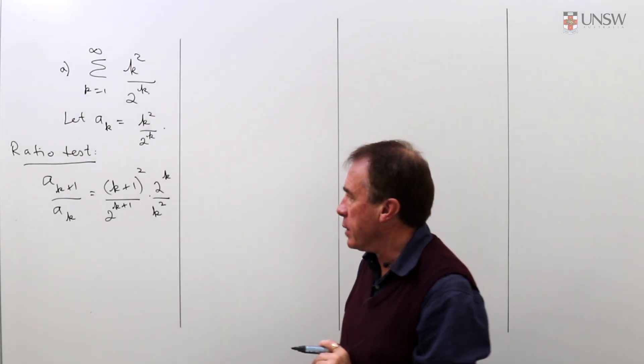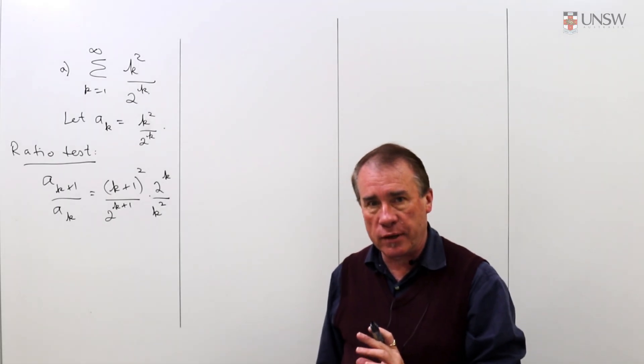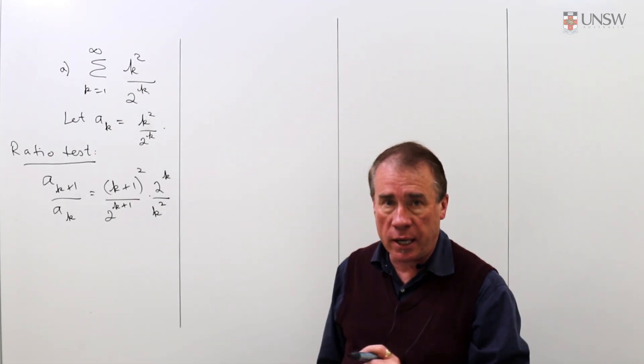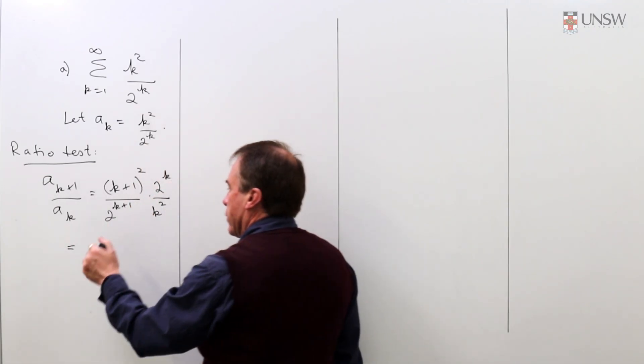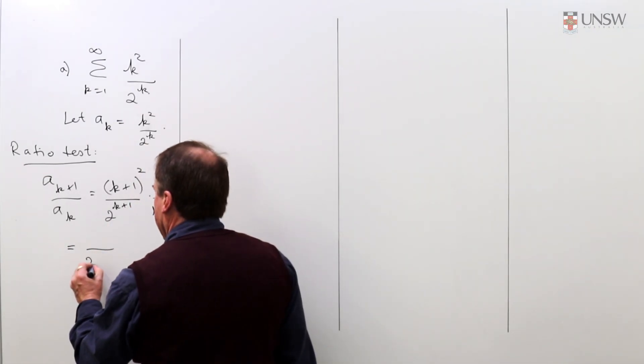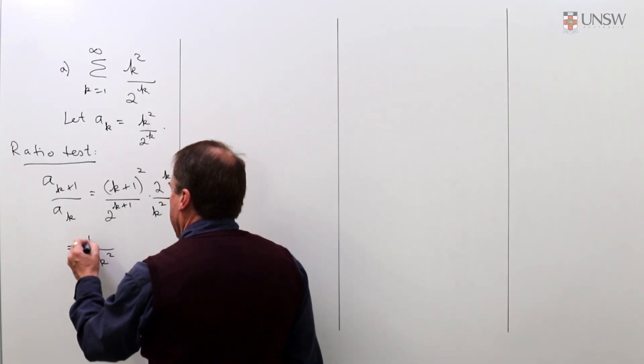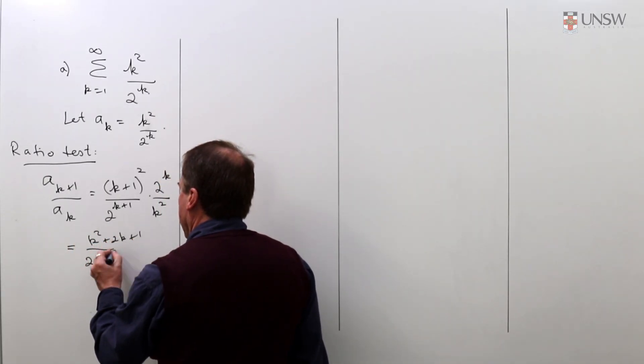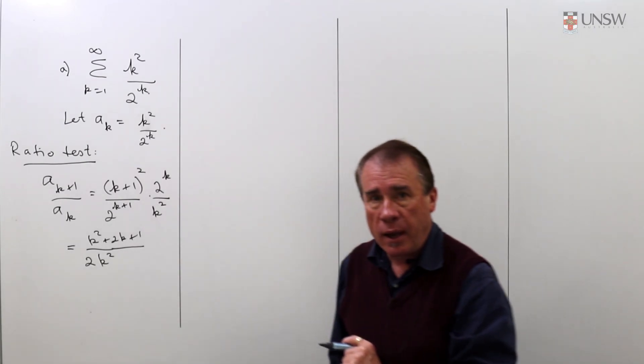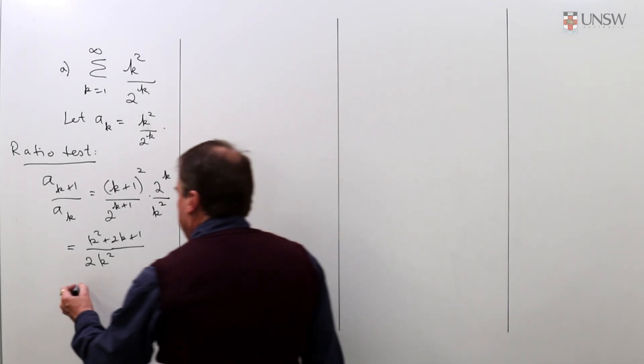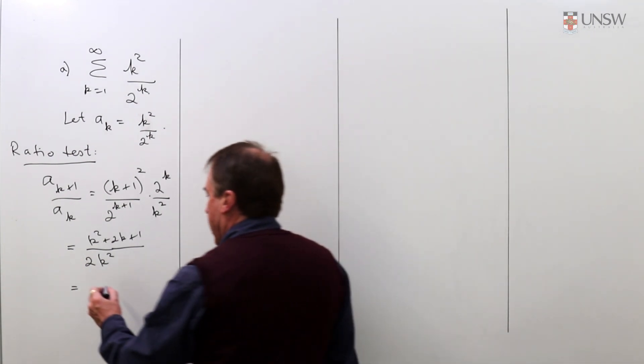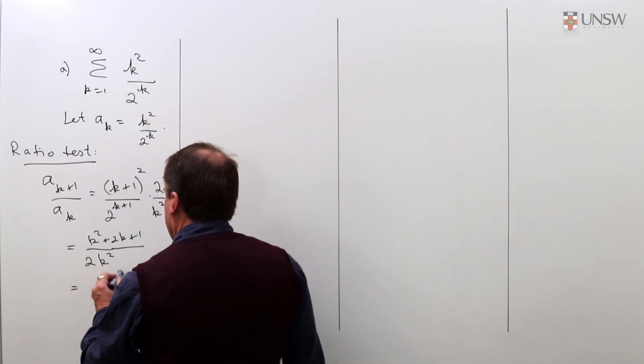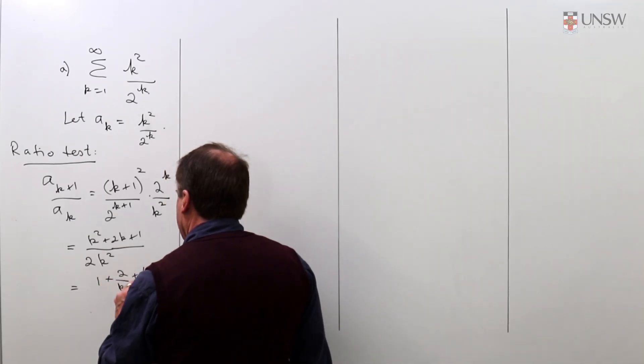The next step is we're going to simplify this before we take a limit as k becomes very big. I can cancel out a lot of the 2's so I get a 2 here and k squared on the bottom. On the top I've got k squared plus 2k plus 1. I can divide by the highest power of k in the denominator which is k squared, so I get (1 plus 2 over k plus 1 over k squared) all divided by 2.